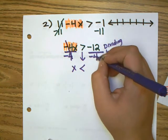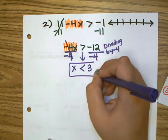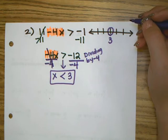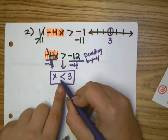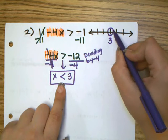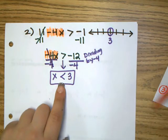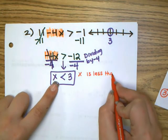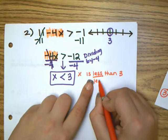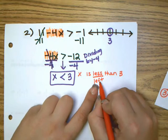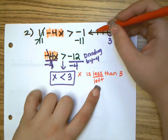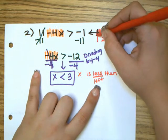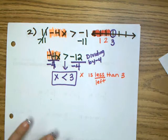Now x is by itself, and negative 12 divided by negative 4 is positive 3, so x is less than 3. To graph: since it is not equal to, we leave the circle open. Less sounds like left, so we shade the left side of the number line, where numbers get smaller and smaller.